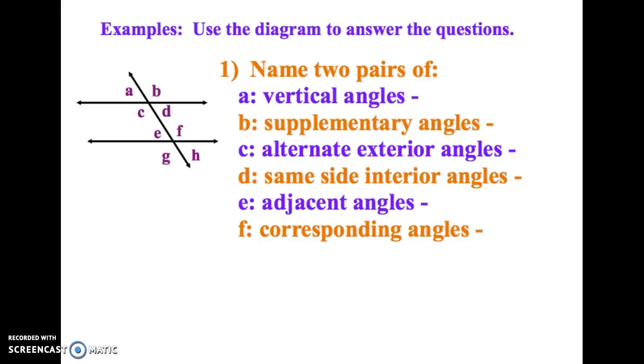So vertical angles, start there. Vertical angles, they have to be when two lines cross opposite sides. So I'm going to look when these two lines cross. B and C is one pair of vertical angles. There's a lot of other choices. Maybe you did the bottom pair. E and H, that's a pair.